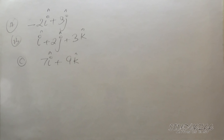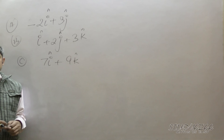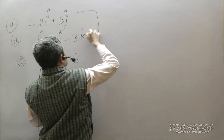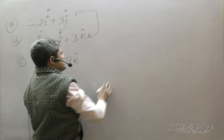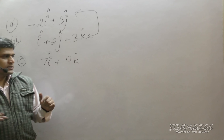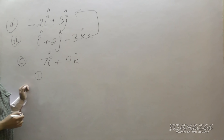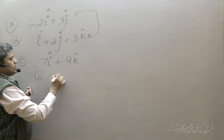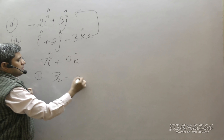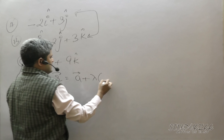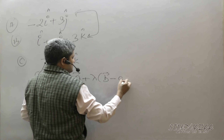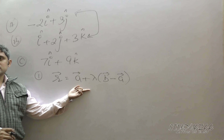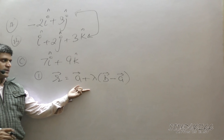Now working on the first approach — Method 1: Equation of straight line in two-point form. The formula is r = vector a + lambda times (vector b minus vector a).